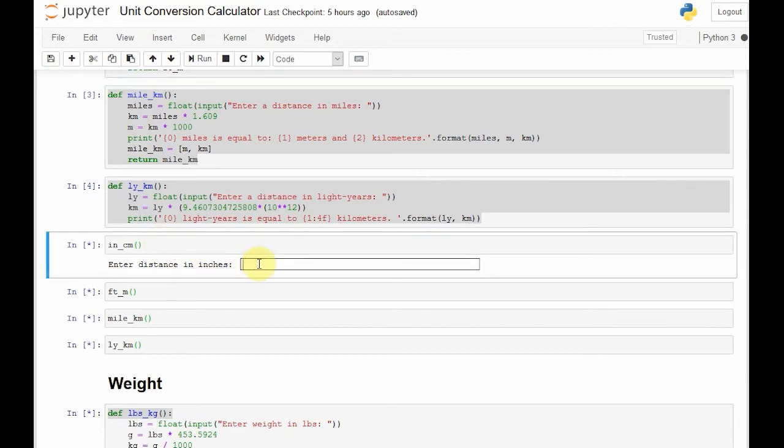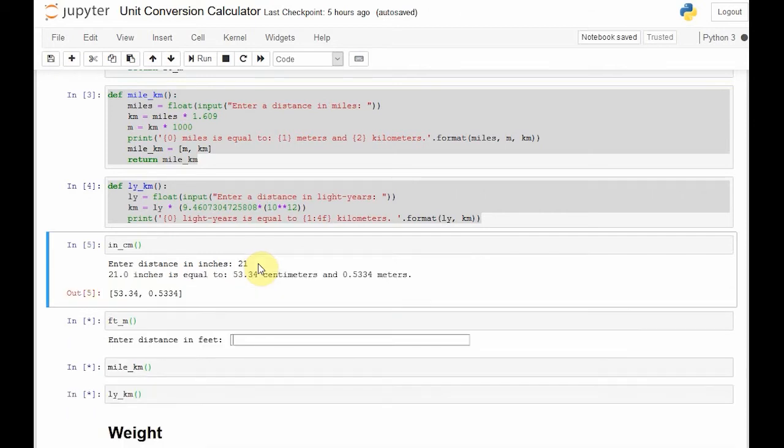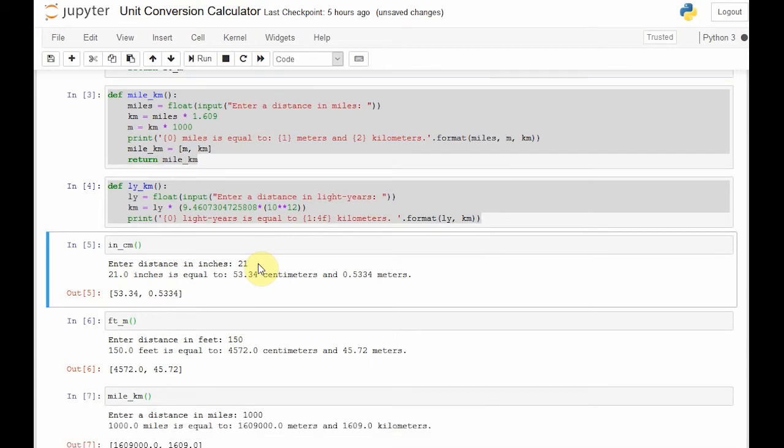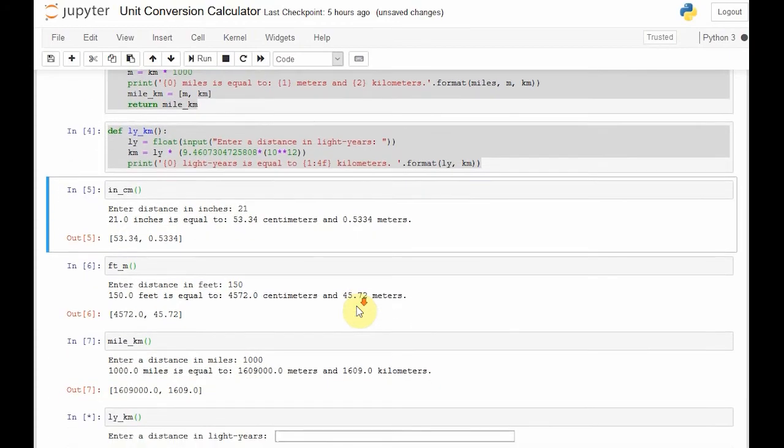So inches to centimeters is already running and it's asking the user for its input. This is 21 inches, 53 centimeters, as well as 0.53 meters. Same with feet, 150 feet, 45.72 meters, miles. If we walked a thousand miles, we would have walked 1,609 kilometers.